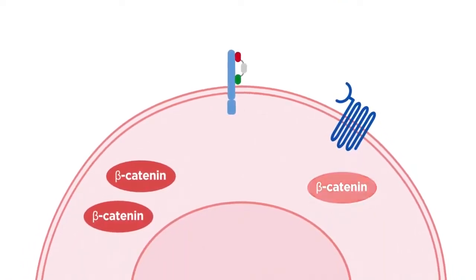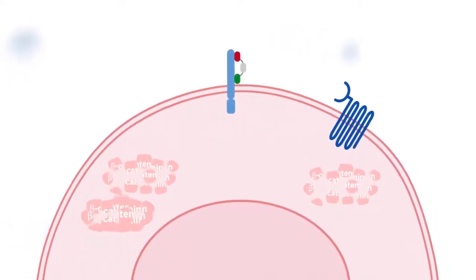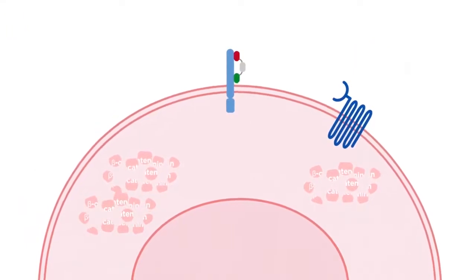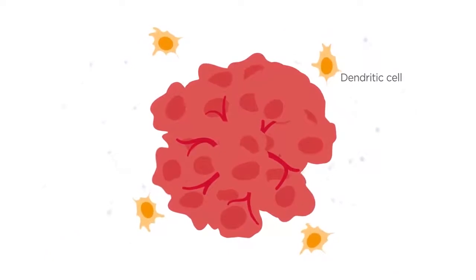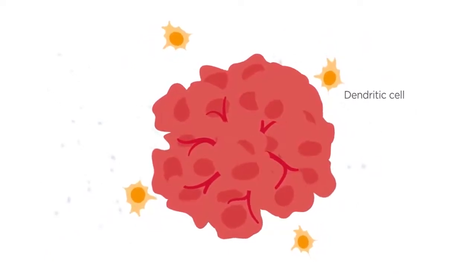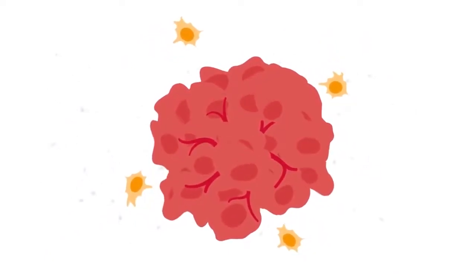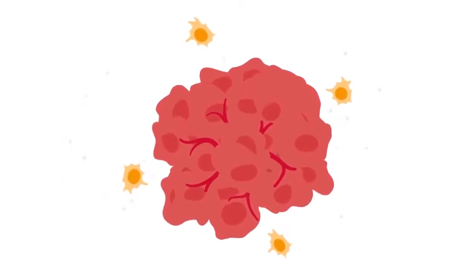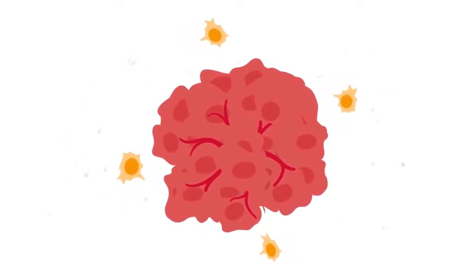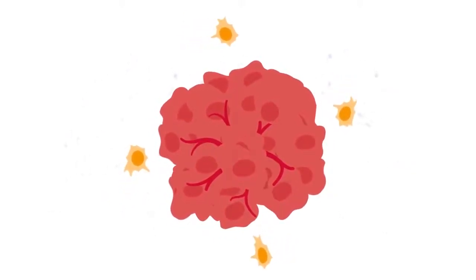This inhibits beta-catenin-mediated signalling and prevents unregulated cell growth. Abnormal Wnt-beta-catenin signalling activation in tumours also silences the immune stimulatory function of dendritic cells, allowing tumour evasion of the immune system.